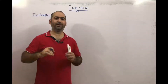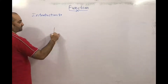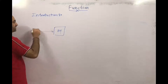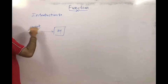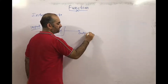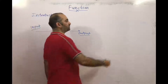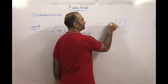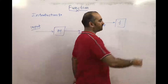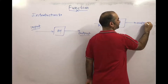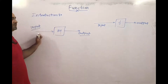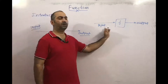I will explain this in a very simple way. We have seen machines. In machines, what will happen? We will give some input, and with each input we will get some output. Same for functions also — in a function, we will give some input and corresponding to that input, we will get some output. So a function works just like a machine: we give input and we get output.